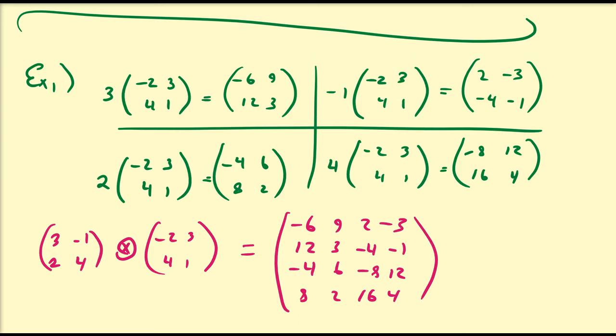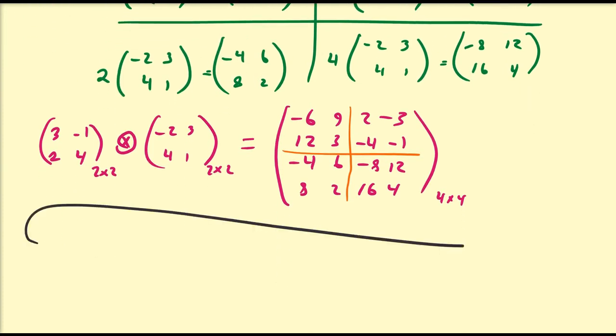It's almost like an extension of scalar multiplication with a whole set of scalars, combining all those resulting matrices into a larger matrix. We clearly see that the Kronecker product between a 2×2 matrix and another 2×2 matrix results in a 4×4 matrix. Some people partition these in block form so you can see where the results come from.